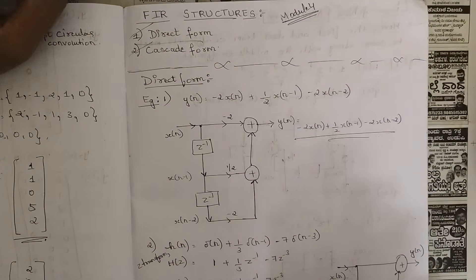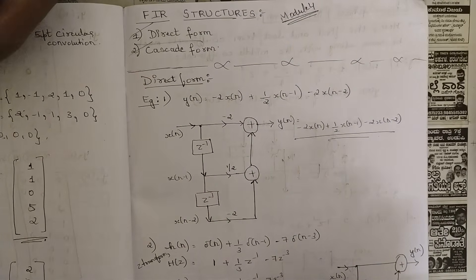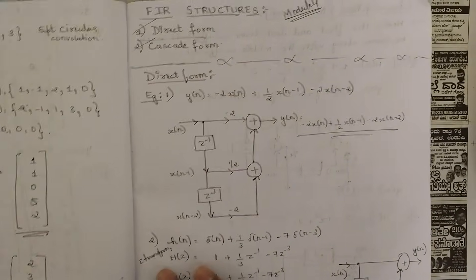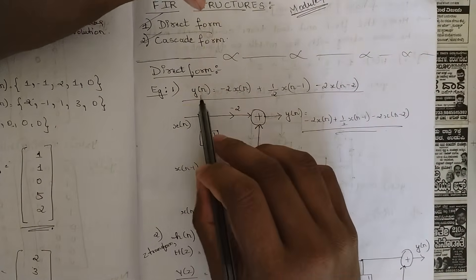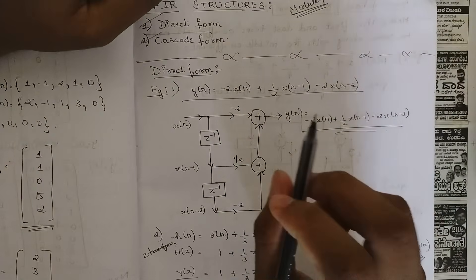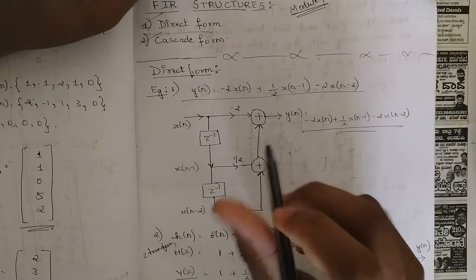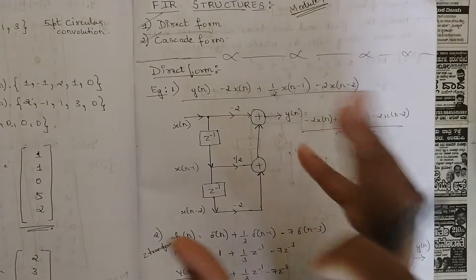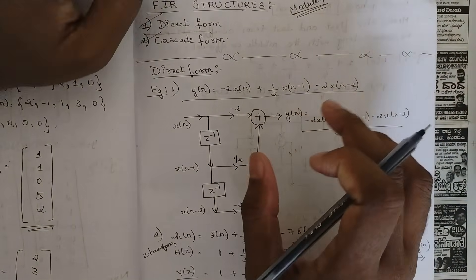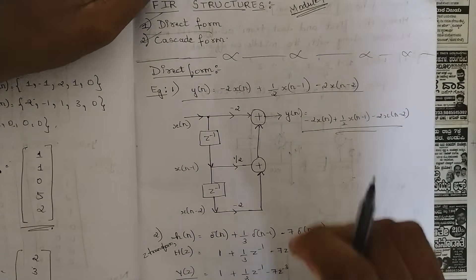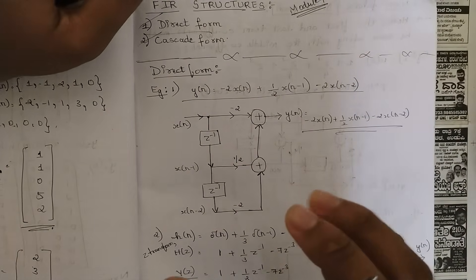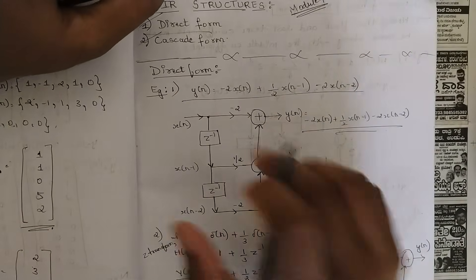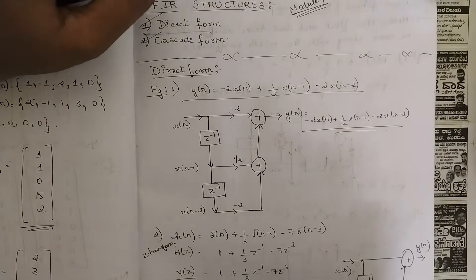First we are going to discuss the direct form — what it is and how the direct form structures look. In these kinds of FIR structures, they give you one simple equation consisting of Y(N) and X(N) terms, and they ask you to write the equivalent direct form or cascaded form structure. Let us discuss one example of how to write the direct form structure for a given equation.